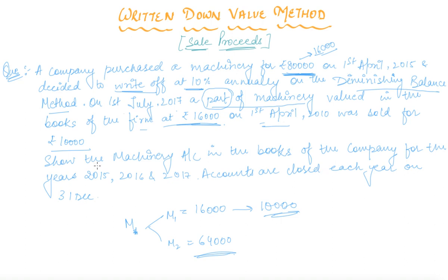We are required to show the machinery account in the books of the company for the years 2015, 2016, and 2017. The accounts are closed each year on 31st December. So now let's start the solution. I am making the format — please go through the question in the meantime.